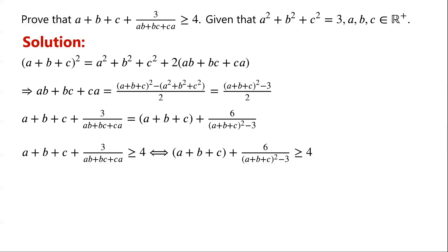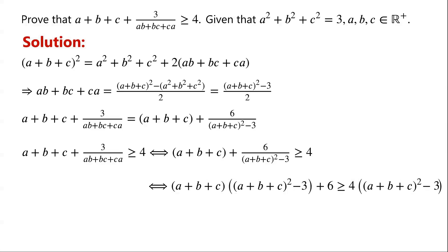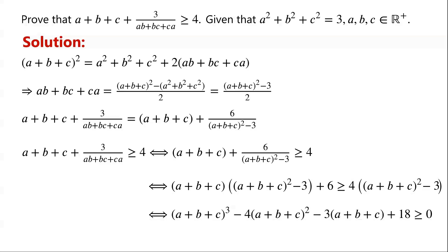Multiplying the inequality by [(a + b + c)² − 3], the inequality holds if and only if (a + b + c) · [(a + b + c)² − 3] + 6 ≥ 4 · [(a + b + c)² − 3]. By rearranging, this is equivalent to proving (a + b + c)³ − 4(a + b + c)² − 3(a + b + c) + 18 ≥ 0.